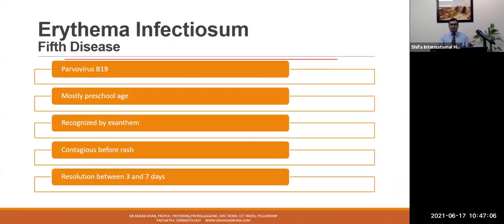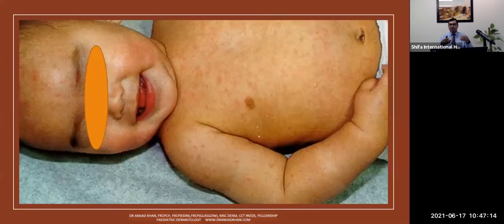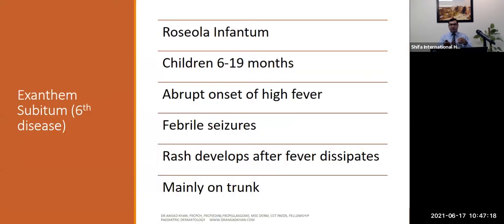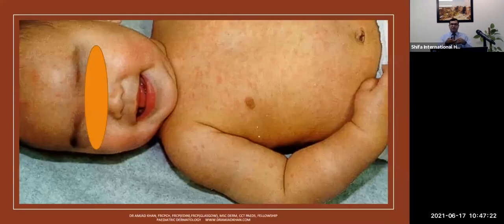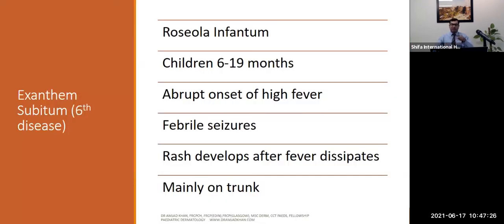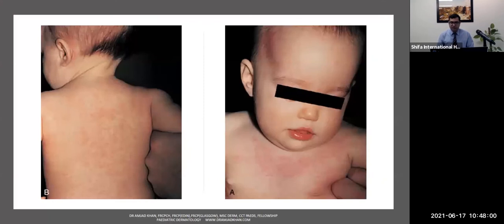Roseola infantum, or sixth disease: you can see a widespread macular papular rash — the child is otherwise laughing and well. The key feature is an abrupt spike of temperature. If a child presents with febrile convulsion in ER and the family reports very high fever under two years of age, and while being observed they develop a rash after the fever subsides, you can be fairly sure it is sixth disease or roseola infantum. It is mainly on the trunk but can involve the face. Symptomatic treatment only.